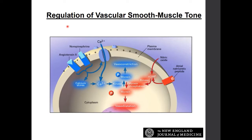Overall, this diagram demonstrates that in oxygen-rich environments, normal calcium channel stores cause vasoconstriction. In states of hypotension, nitric oxide is increased, myosin decreases, and ultimately vasodilation and hypotension result.